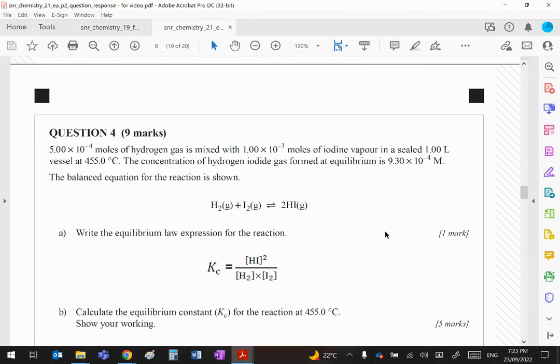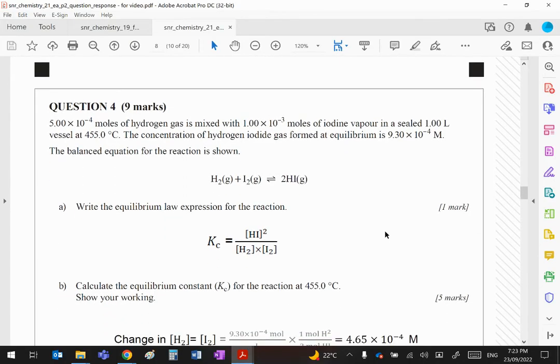All right guys, Question 4, Paper 2. 5 times 10 to the minus 4 moles of hydrogen gas is mixed with 1 times 10 to the minus 3 moles of iodine vapor in a sealed 1 liter vessel at 455 degrees Celsius. The concentration at equilibrium is 9.3 times 10 to the minus 4. They give you the reaction.